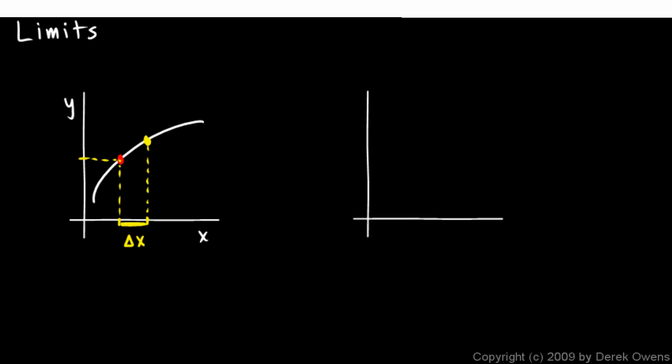The value of the function at position x and the value of the function at x plus delta x gives us a corresponding y interval. And the slope of this segment right here is an approximation to the slope of the curve at that point.